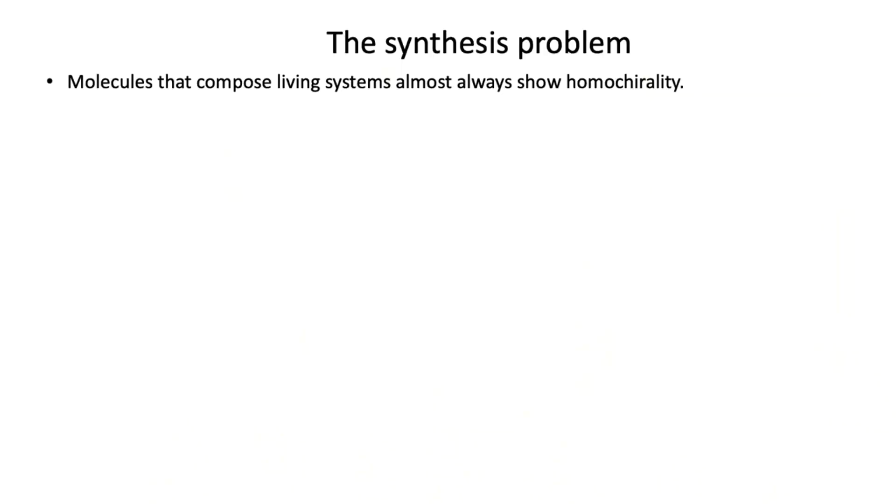Here's the synthesis problem, if you just want to make the molecules. The molecules that compose living systems almost always show homochirality — meaning they have one handedness and not the other. The vast majority of biological molecules, except for very small ones like water and acetic acid, are mirror images of each other — just like your left hand and right hand. They're non-superimposable; you can't put a left-handed glove on your right hand. All molecules in biology are like that. That is very hard to make — just one mirror image of a compound. It can be done, but it's very hard.